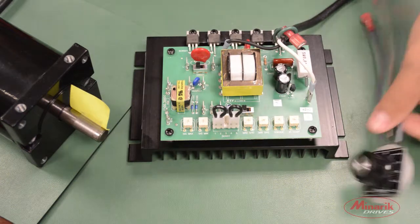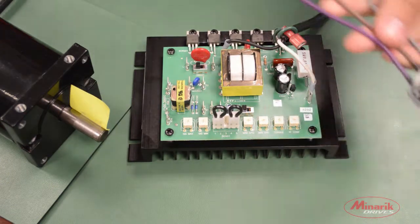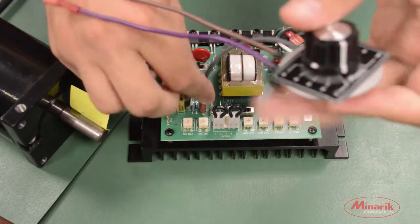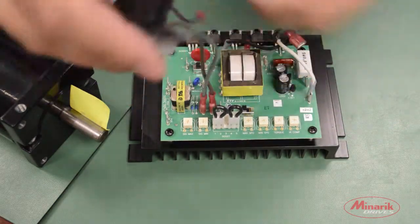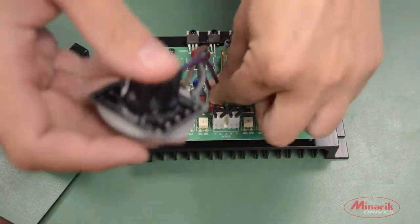Next, we'll attach a speed potentiometer to the drive. We'll take the common lead of the speed potentiometer connected to S1, the wiper to S2, and the positive lead to S3.